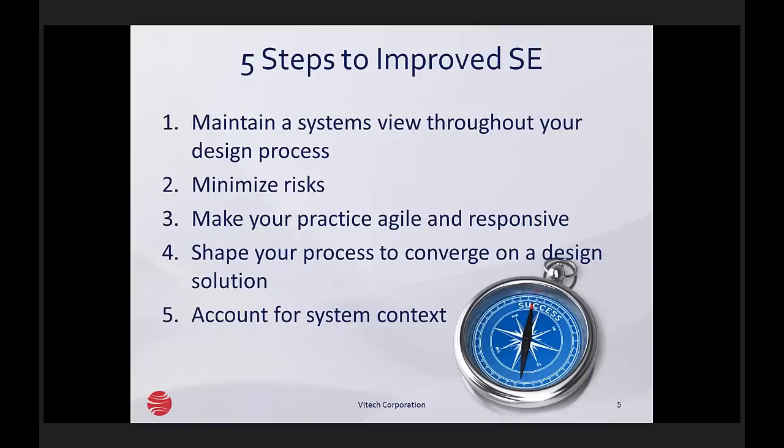Step number one is to maintain a systems view throughout your design process. Step number two is to minimize the risks. In step number three, we make your practice agile and responsive. In step number four, we shape our processes to converge on a design solution. And in step number five, we account for the system context. We'll discuss each of these in some detail as we get through the program today, as they are all addressing particular problems that confront the systems engineer in today's world.